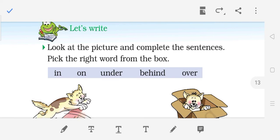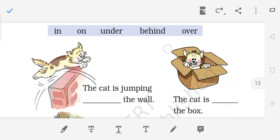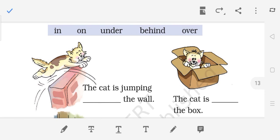Now, we will do one exercise given on page number 66 of your textbook. Look at the picture and complete the sentences. Pick the right word from the box. And the words are in, on, under, behind, over. So, let's observe the first picture. We can see a cat which is trying to jump. The sentence is, the cat is jumping dash the wall. So, the answer will be, the cat is jumping over the wall.